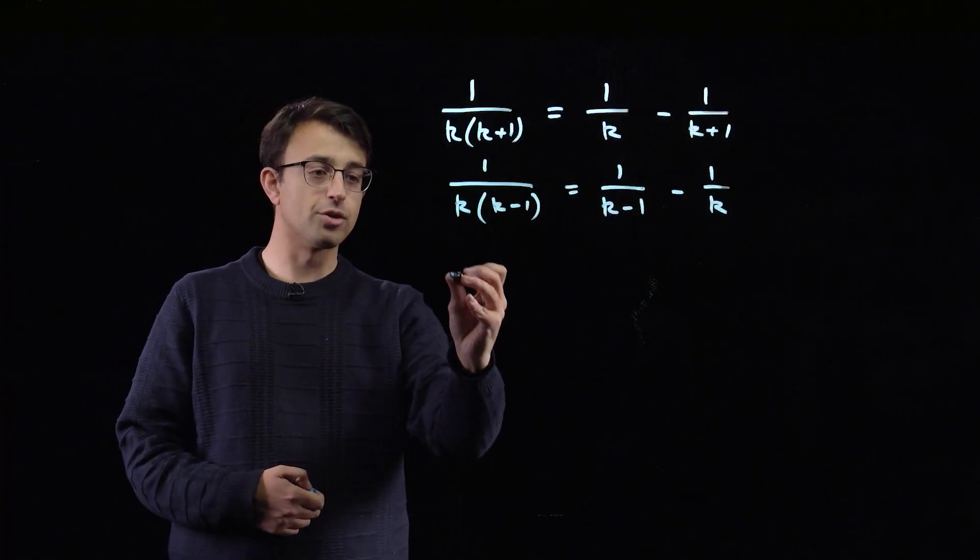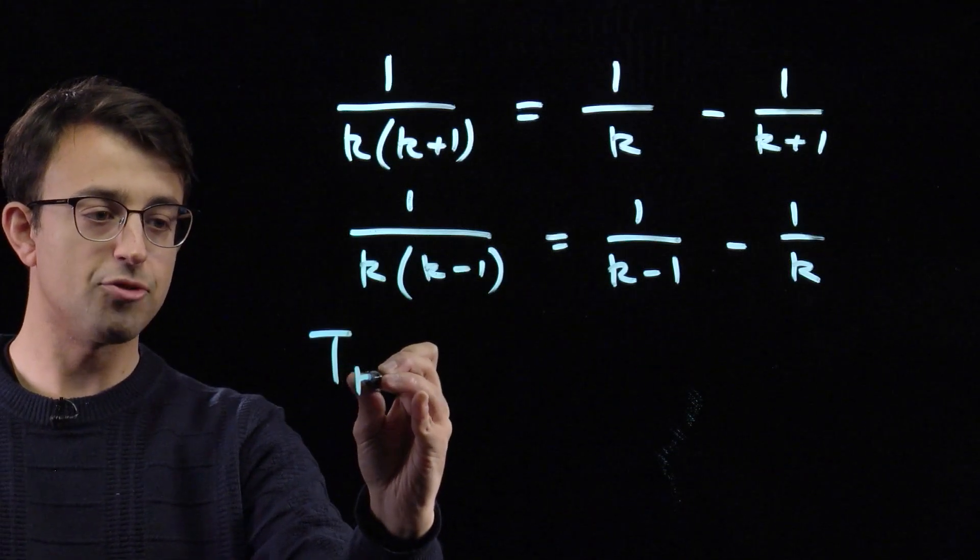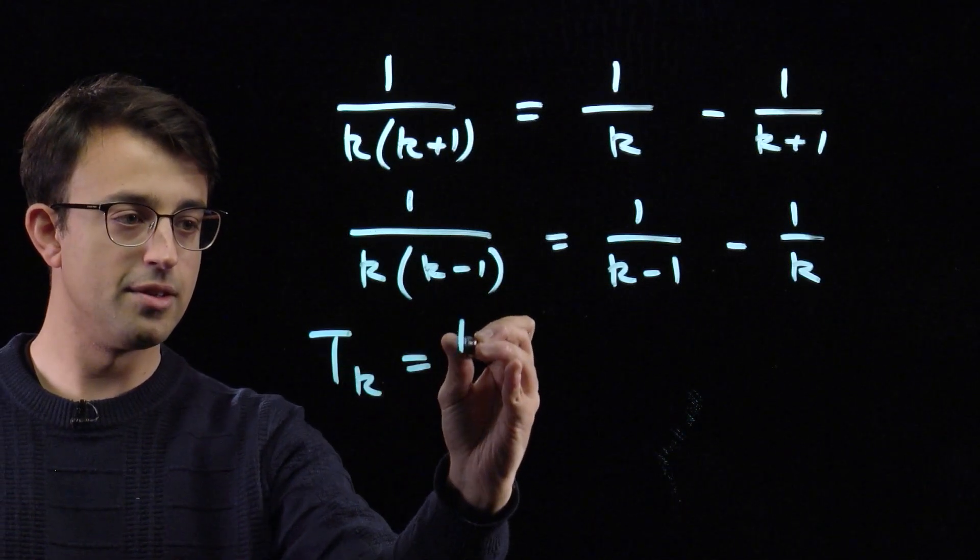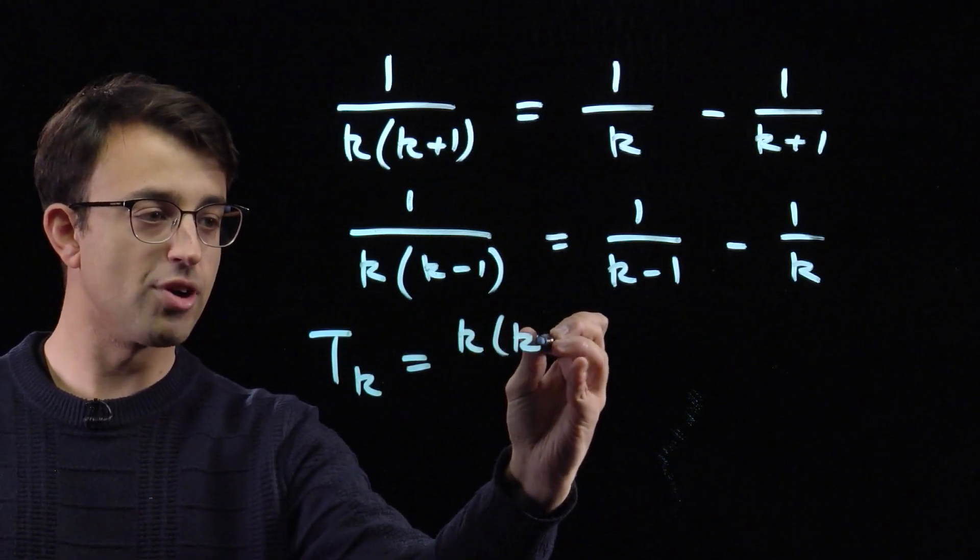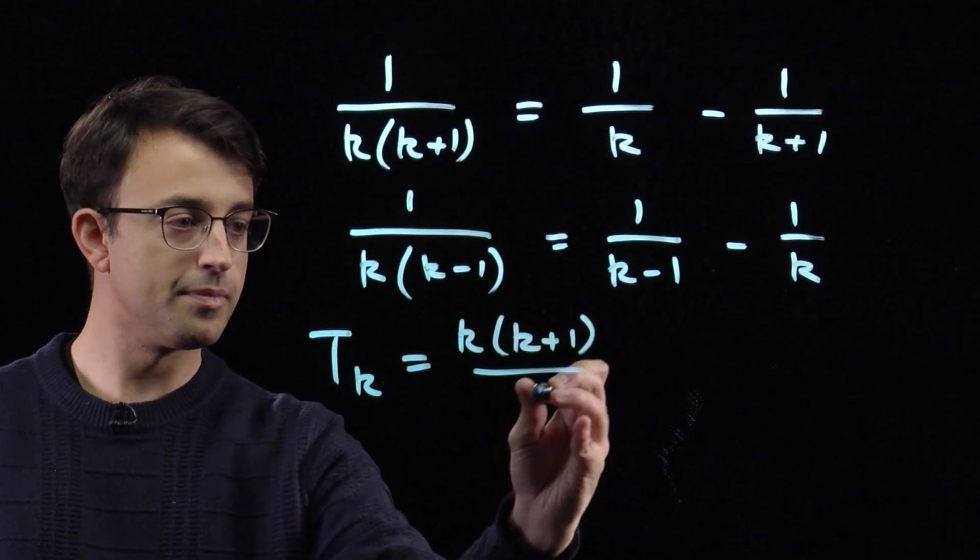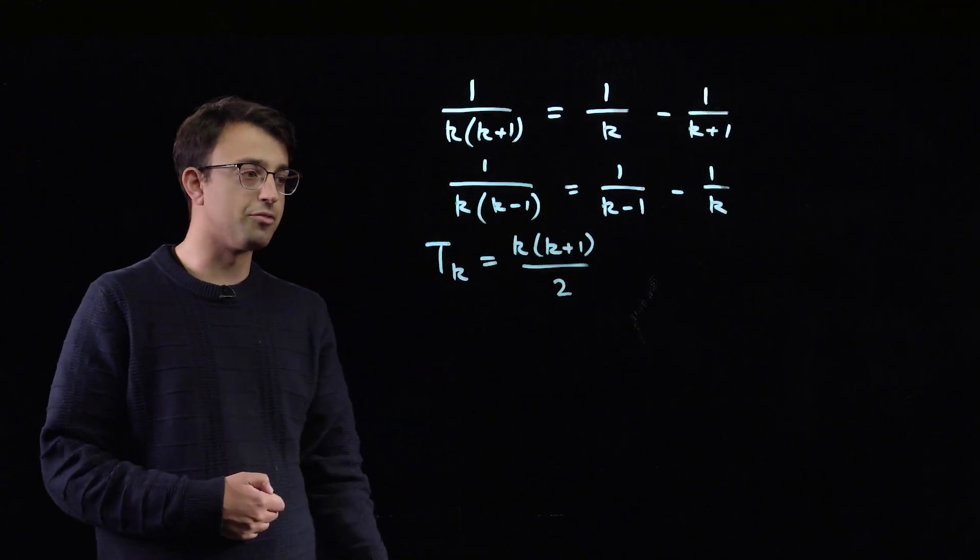Okay, so now we can move back to triangle numbers. Let's write tk for the kth triangle number and apply our formula from above.